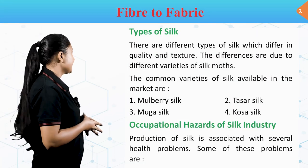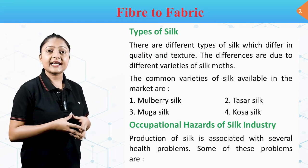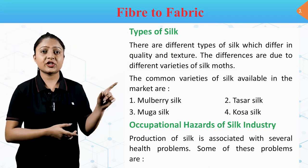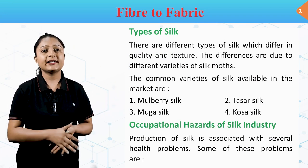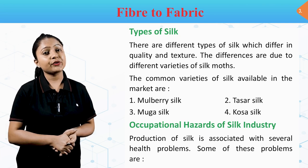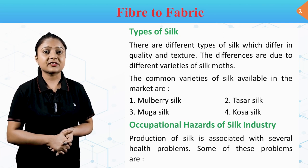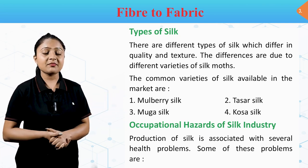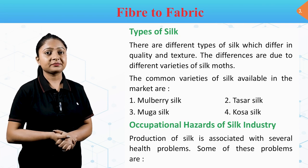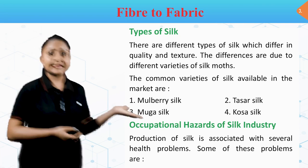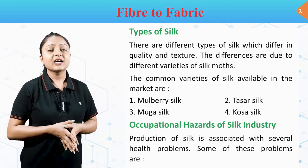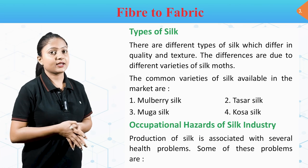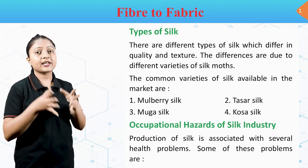Types of Silk — Silk के कितने types होते हैं? There are different types of silk which differ in quality and texture, due to different varieties of silk moths. The common varieties available in the market are: Mulberry silk, Tassar silk, Muga silk and Kosa silk.